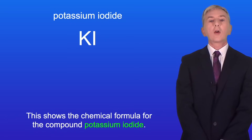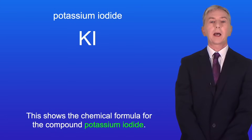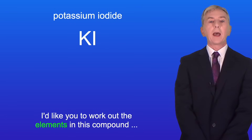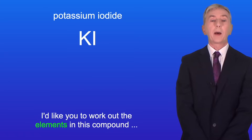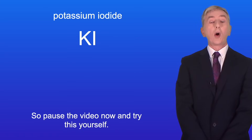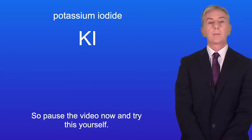This shows the chemical formula for the compound potassium iodide. I'd like you to work out the elements in this compound and the number of atoms of each element, so pause the video now and try this yourself.